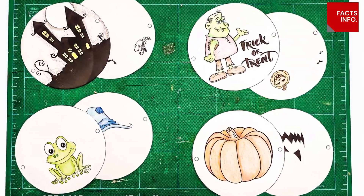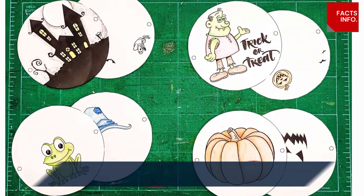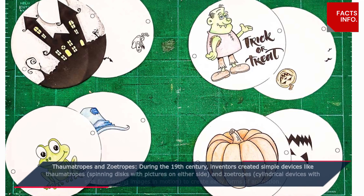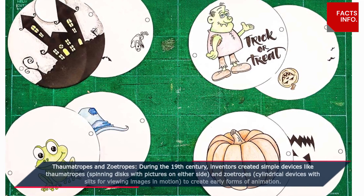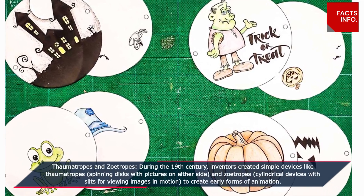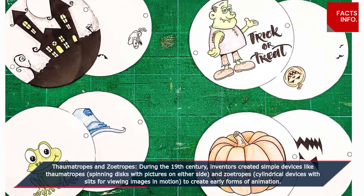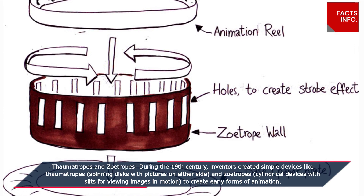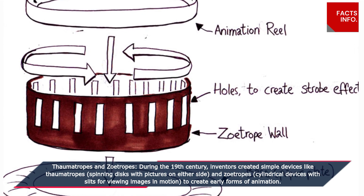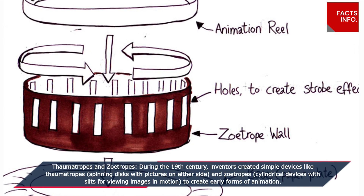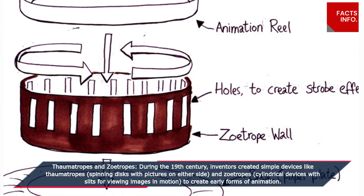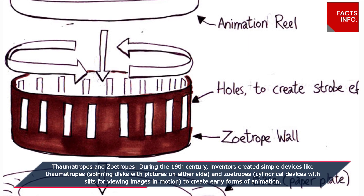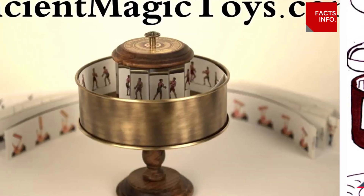Thaumatropes and zoetropes. During the 19th century, inventors created simple devices like thaumatropes — spinning disks with pictures on either side — and zoetropes, cylindrical devices with slits for viewing images in motion, to create early forms of animation.